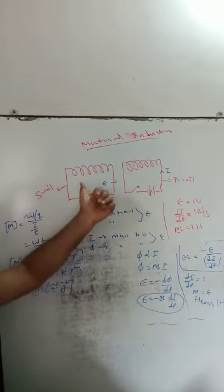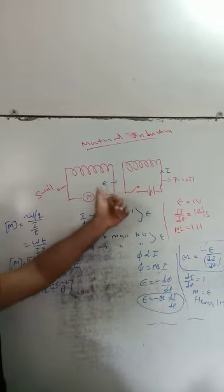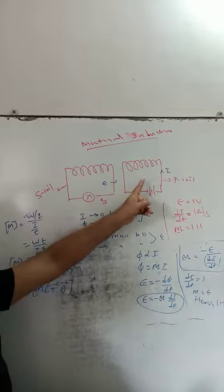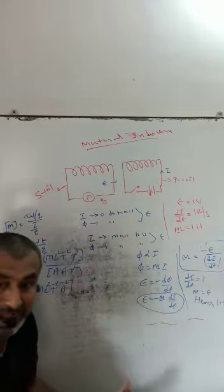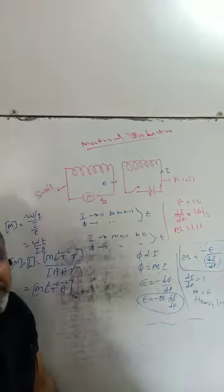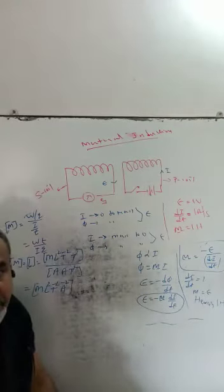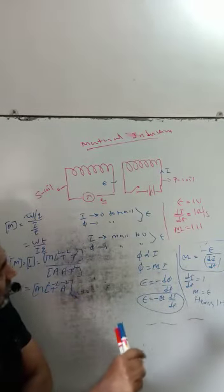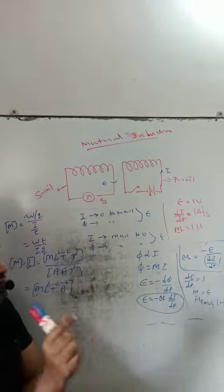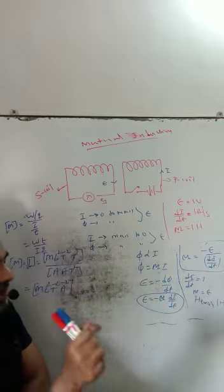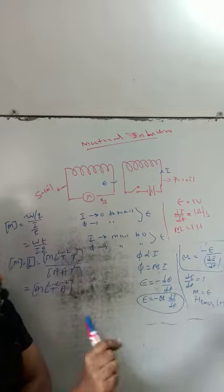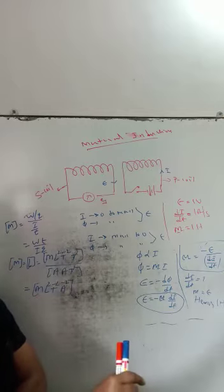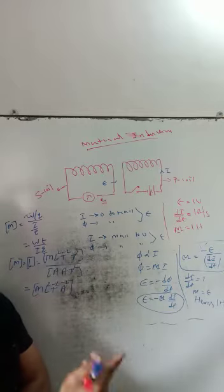EMF induced in one coil due to change of current in another coil is called mutual induction. Self induction, on the other hand, is when an EMF is induced in a coil due to change of current in the same coil — that is called self induction. When current changes in one coil, EMF induced in that same coil is self induction.